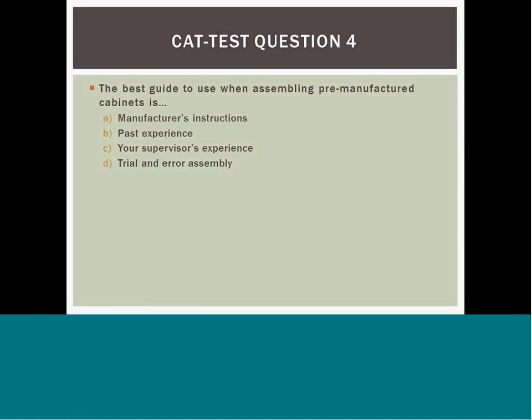Question 4: The best answer when assembling pre-manufactured cabinets is A) manufacturer's instructions, B) past experience, C) your supervisor's experience, or D) avoid errors in assembly. Answer A is the best answer. Though past experience and supervisor's experience may come into play, every cabinet is different and the manufacturer's instructions will clearly outline the proper assembly instructions. Manufacturer's instructions also provide a warranty when the item is installed properly, which may be voided if the cabinets are installed incorrectly.